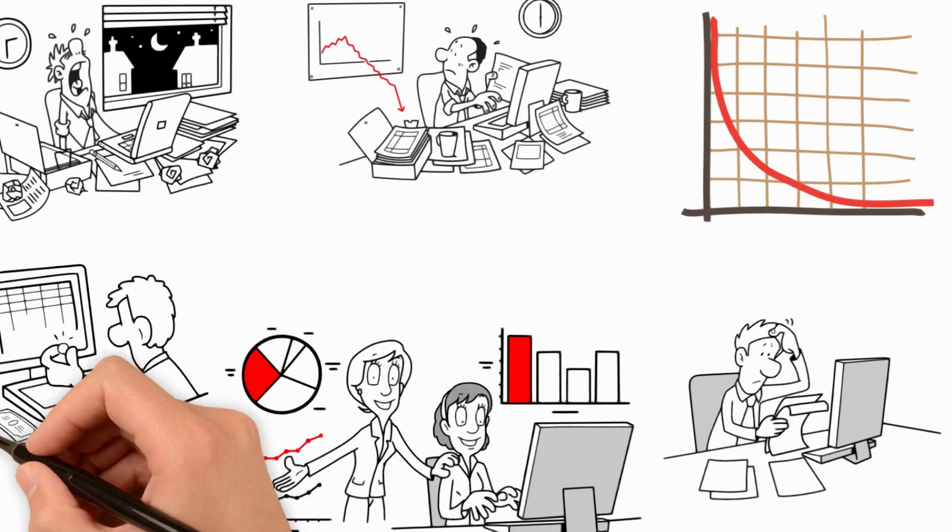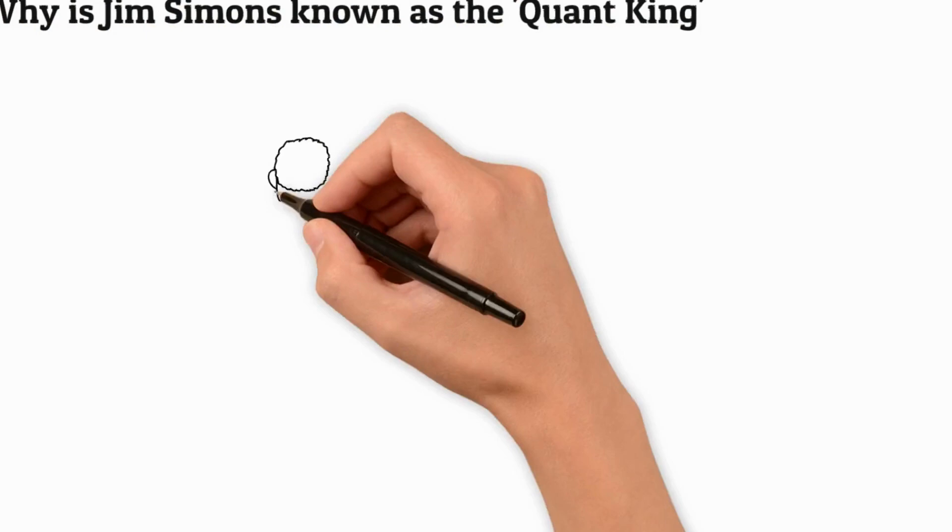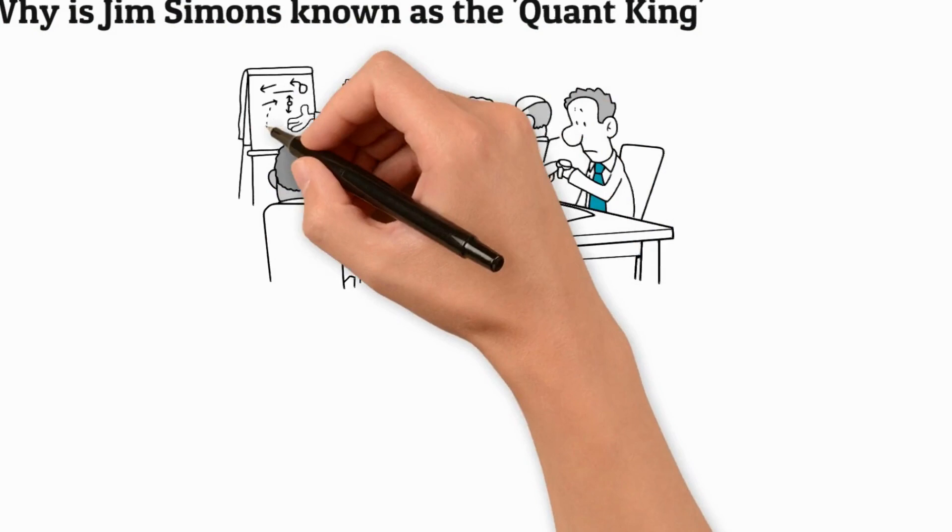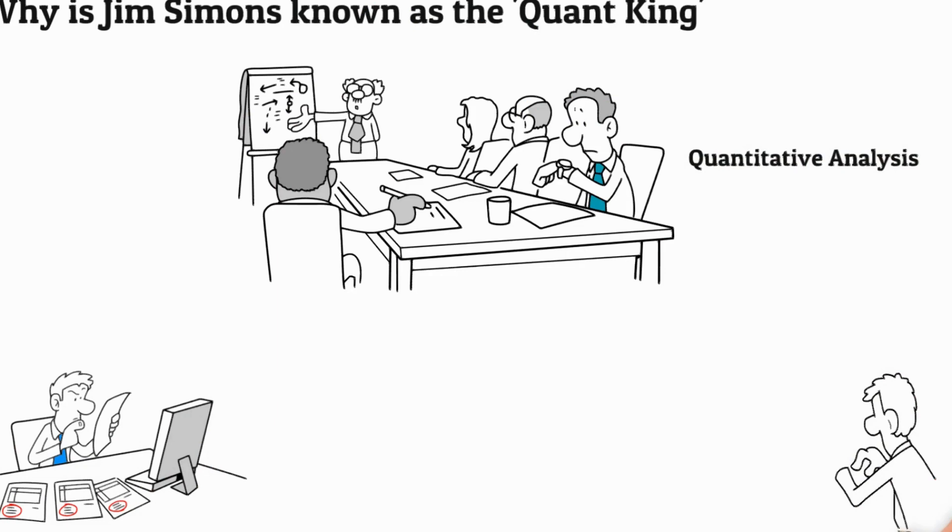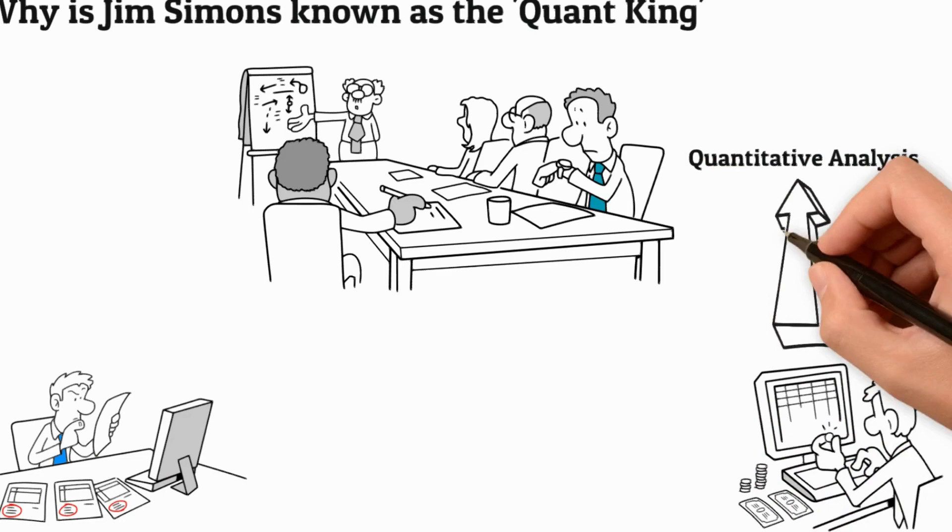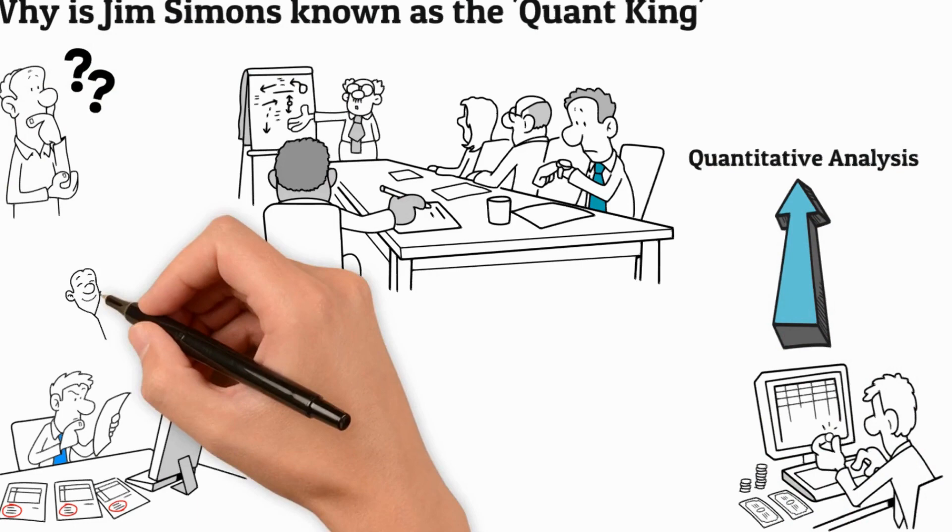Why is Jim Simons known as the Quant King? Jim Simons is one of the most successful investors in the world, and he has earned a reputation as the Quant King due to his impressive track record. He is well known for his ability to use quantitative analysis to identify investment opportunities and make remarkably accurate predictions about market trends. His success has been attributed to his use of sophisticated algorithms and mathematical models that make his decisions more efficient than those of other investors.